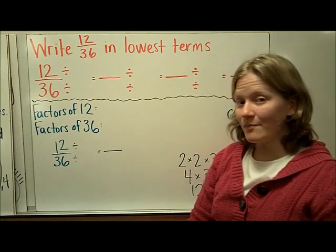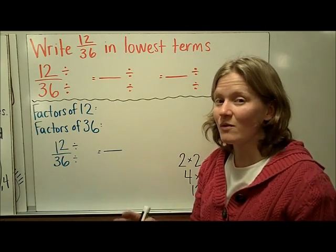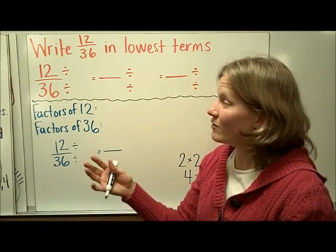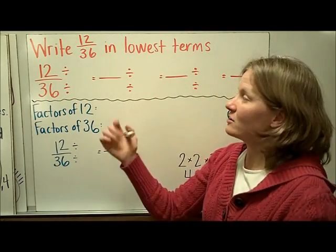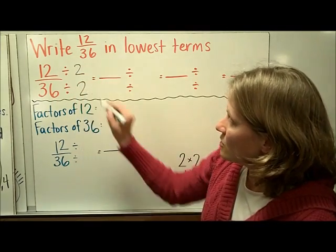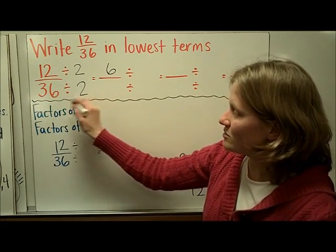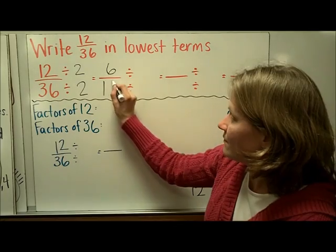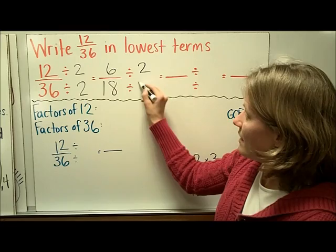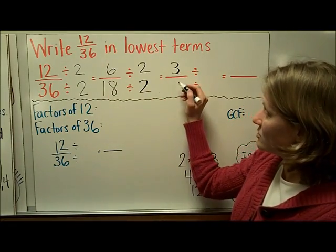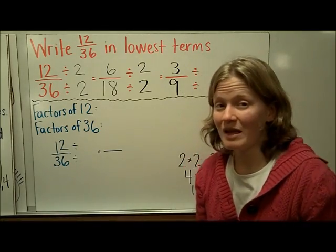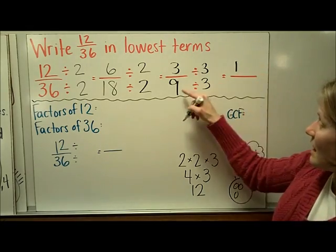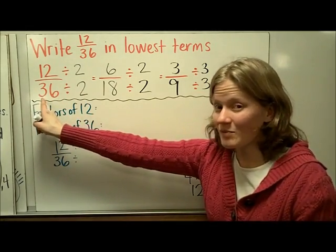Let's do one final problem using both strategies. If you're asked to write 12 thirty-sixths in lowest terms, the first way is to divide by common factors. I'll start with 2 because they're both even: 12 divided by 2 is 6, and 36 divided by 2 is 18. These are still both even, so I'll divide by 2 again: 6 divided by 2 is 3, and 18 divided by 2 is 9. Now they're multiples of 3, so I'll divide both by 3: 3 divided by 3 is 1, and 9 divided by 3 is 3. So 12 thirty-sixths in simplest form is 1 third.